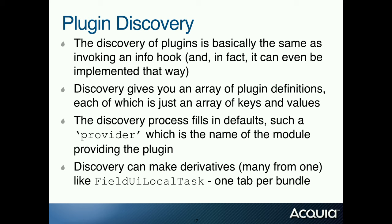A concrete example of derivatives is the field UI local task. Field UI wants to put a tab on every bundle of every entity type — a bundle is like a node type. Field UI can't know in advance every bundle of every entity type because you might create new ones. So it instead makes derivatives: it asks the entity system for every entity type and every bundle, and makes a derivative — basically a tab — corresponding to each entity and bundle. That's when you want derivatives: when you have something dynamic like entities and bundles and want a plugin corresponding to each one.